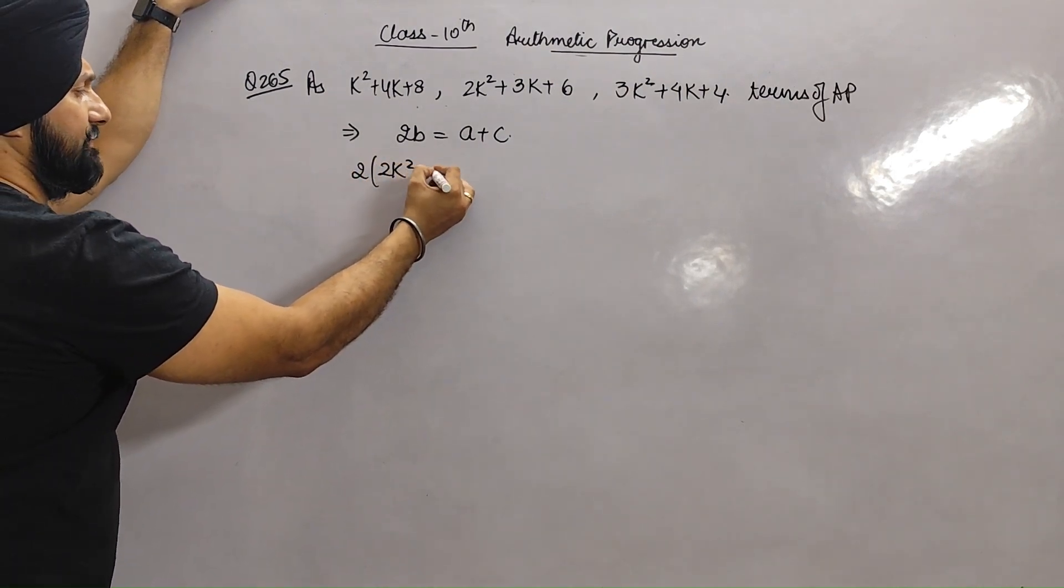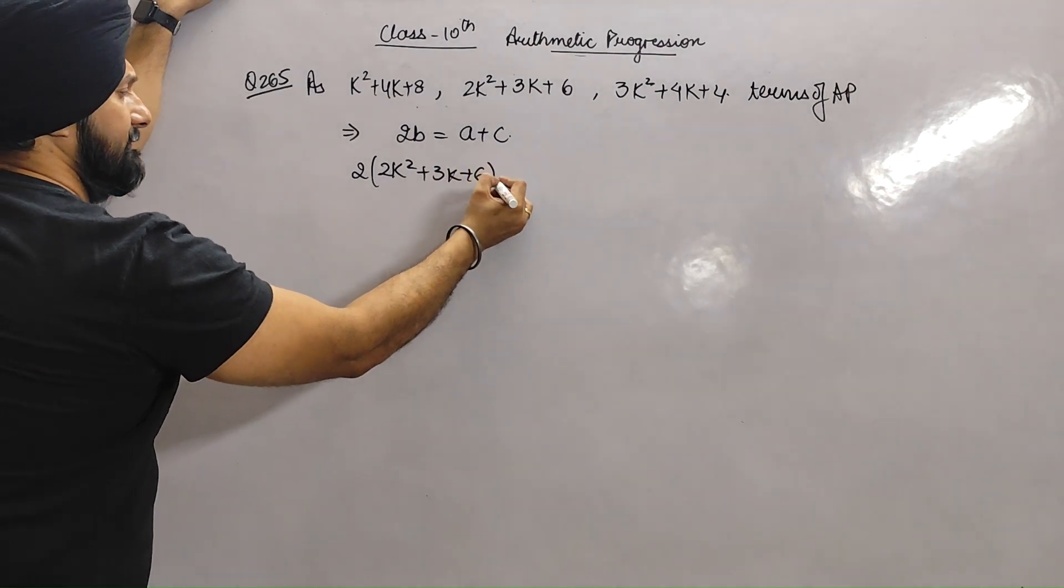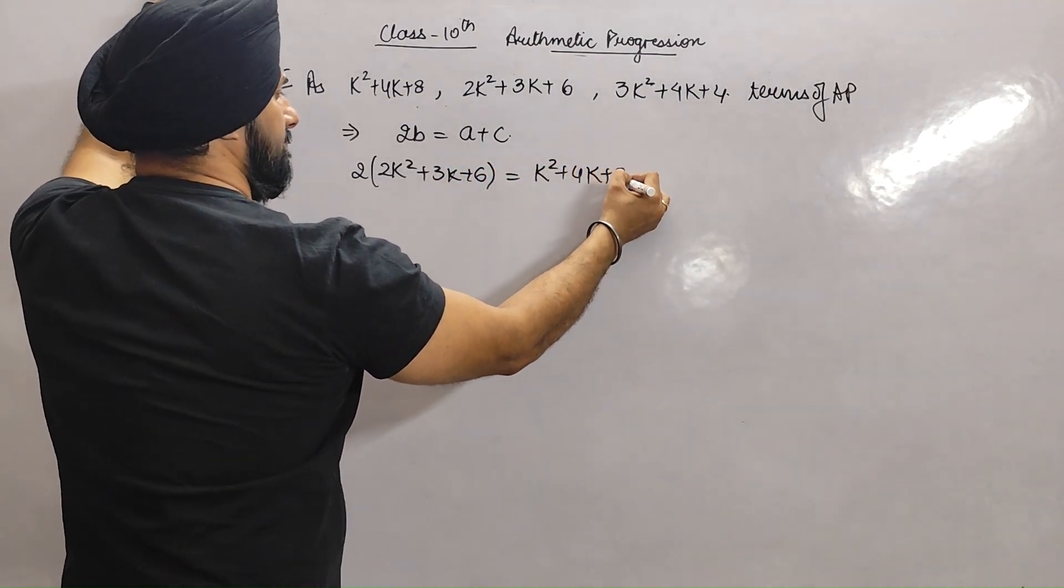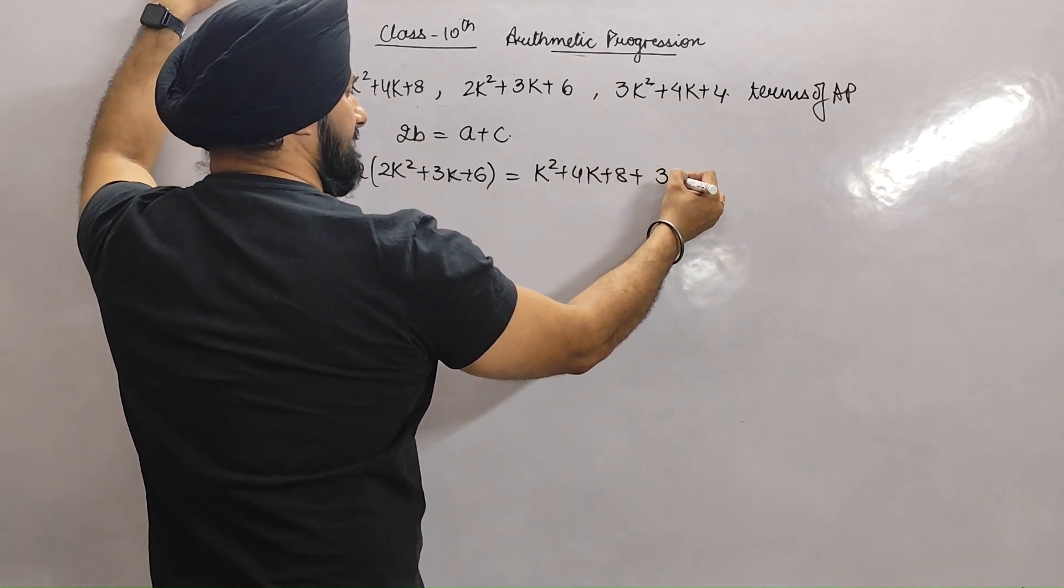2K square plus 3K plus 6 is equal to K square plus 4K plus 8 plus 3K square plus 4K plus 4.